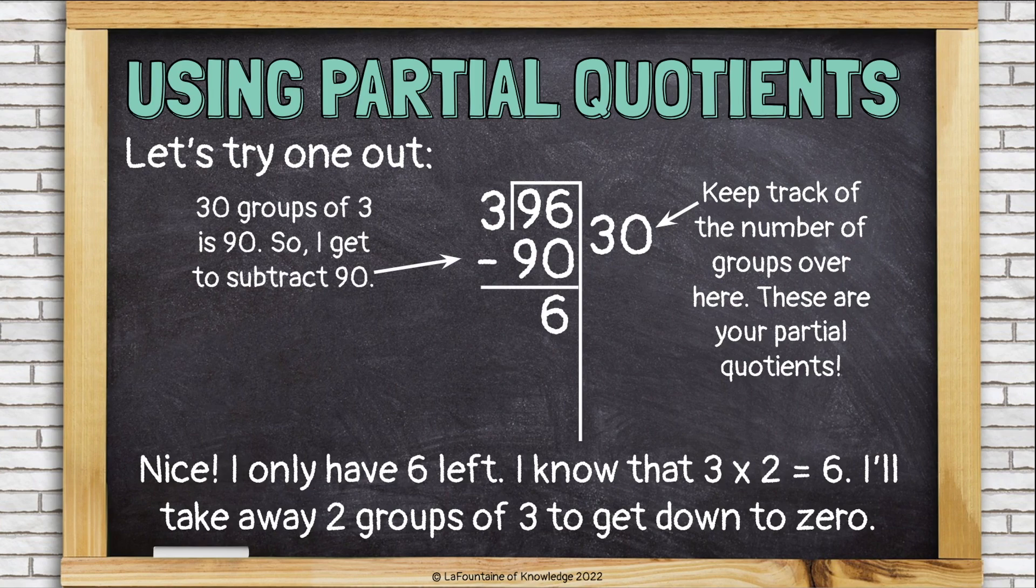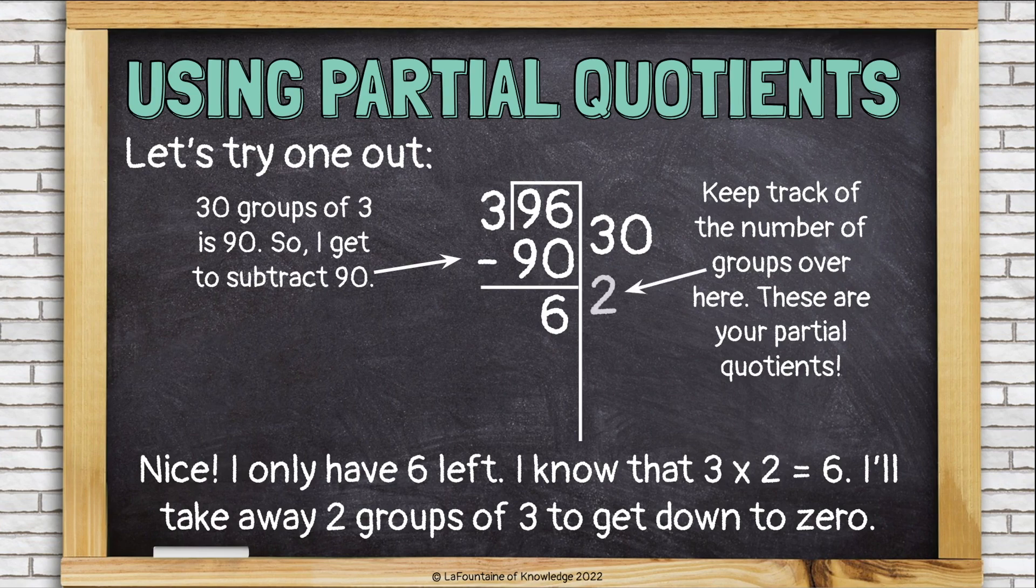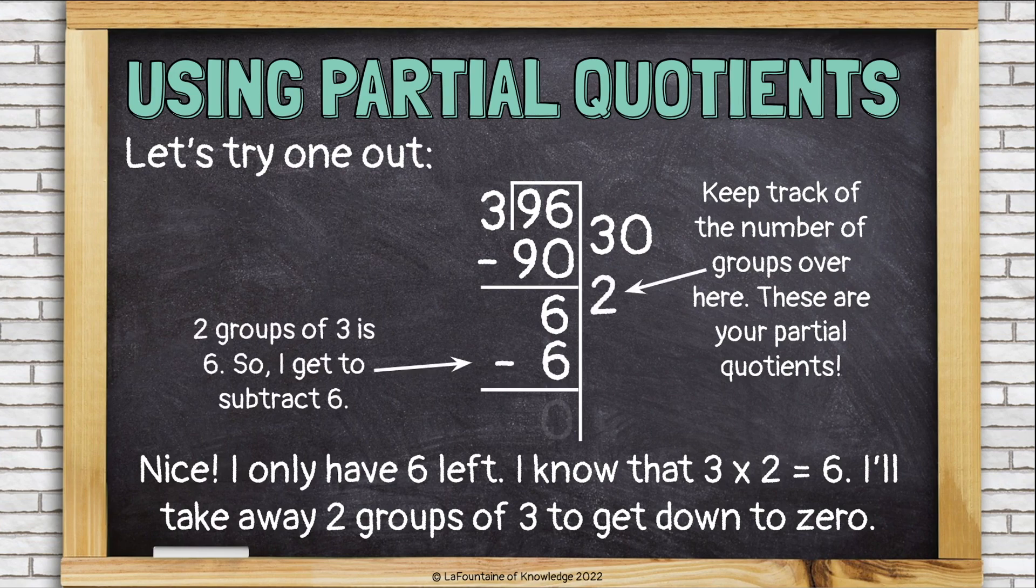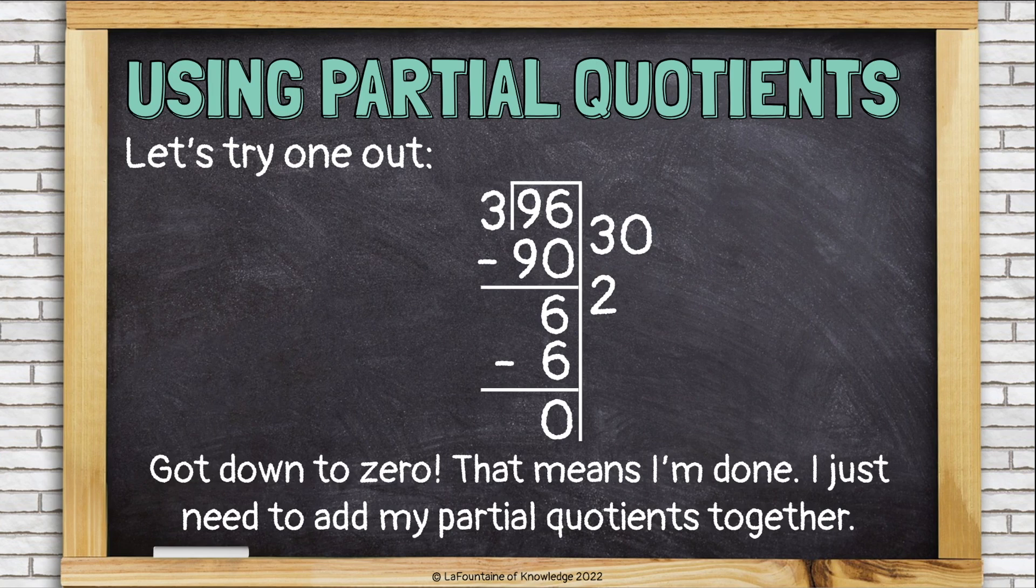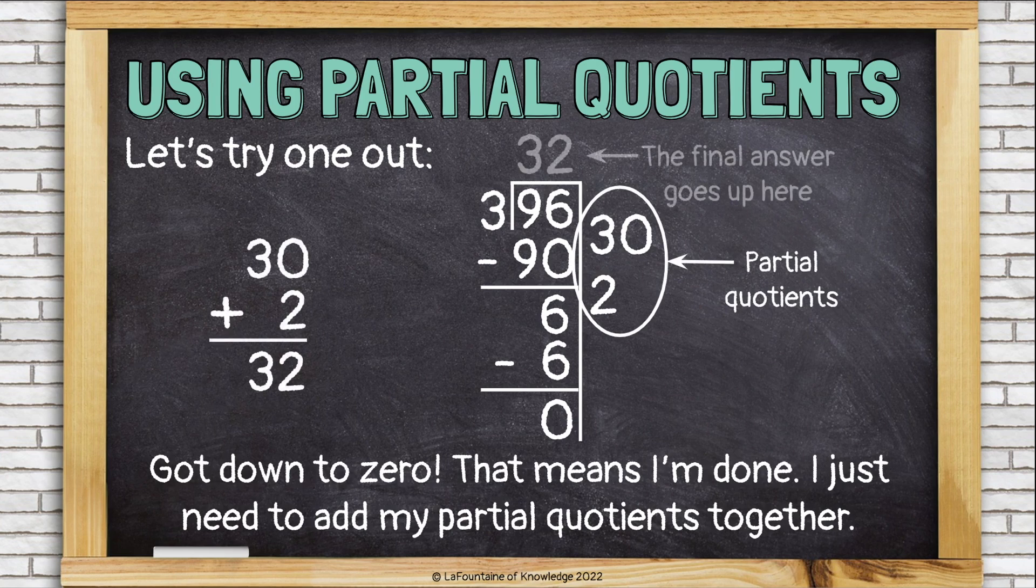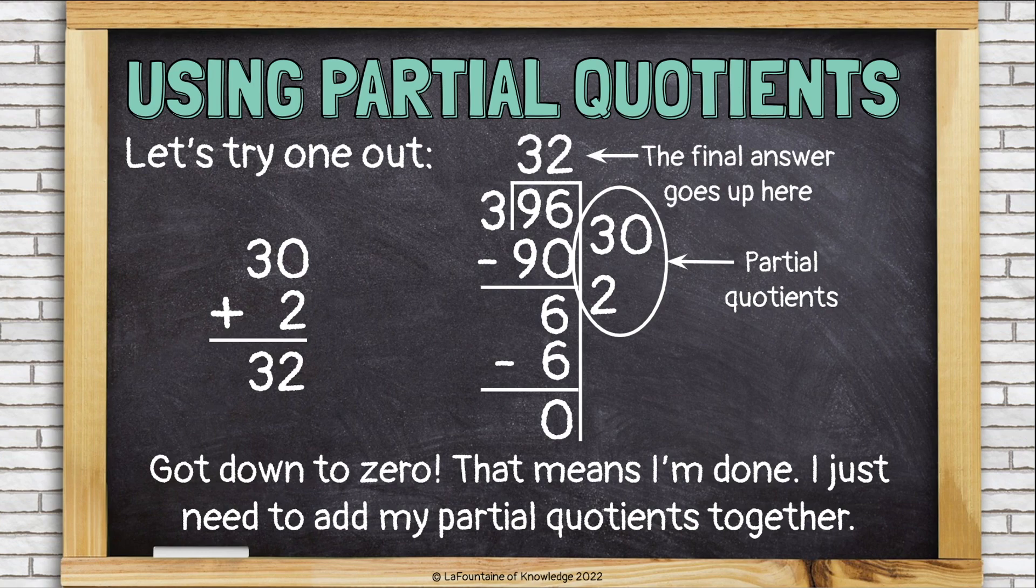Nice, I only have 6 left. I know that 3 times 2 is 6, so I'll take away 2 groups of 3 to get all the way down to 0. Got down to 0. That means I'm done. I just need to add all of my partial quotients together. Here's my partial quotients. Add them up. And the final answer goes on top. 96 divided by 3 is 32.